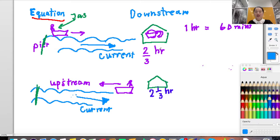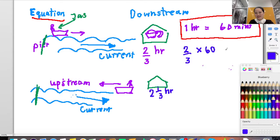I'm going to find out time by changing from hours to minutes. You know that one hour equals 60 minutes, so two over three hours multiplied with 60, we cut it, equals 40 minutes.